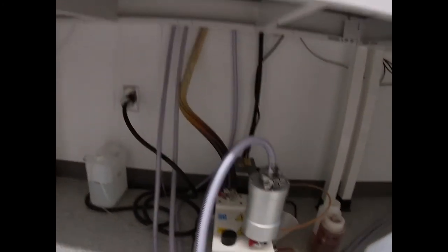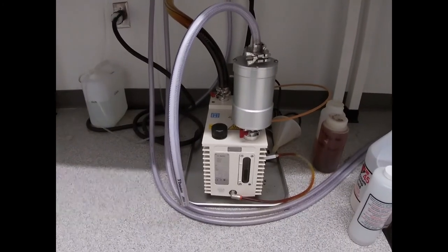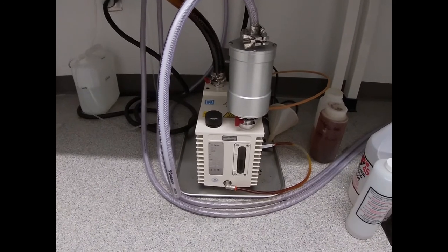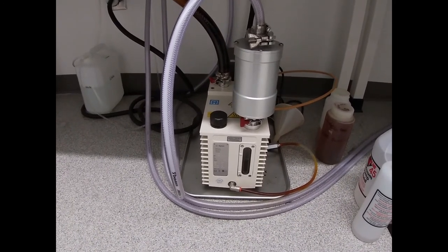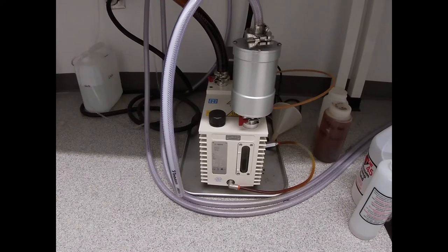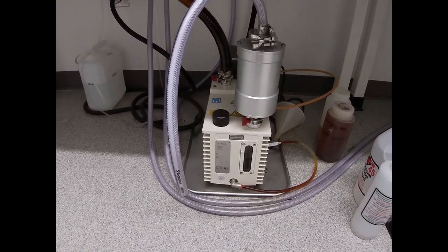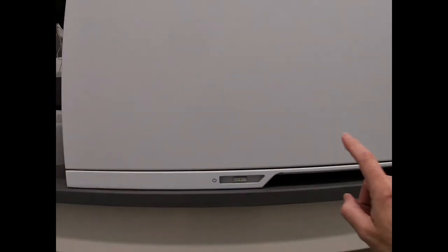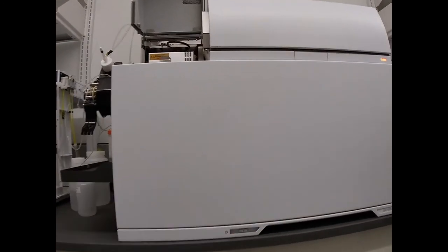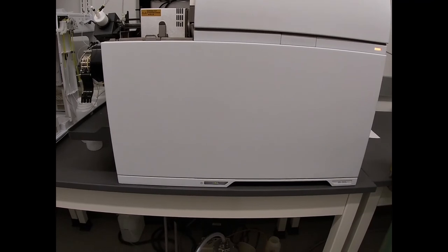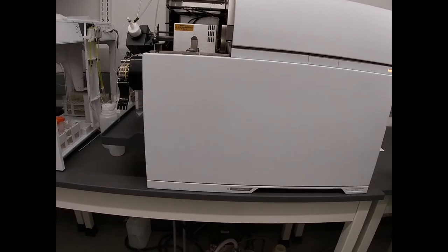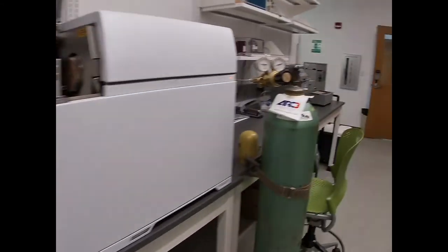So our vacuum system consists of a fore pump or a roughing pump. It is connected to the area actually between the sampler and the skimmer cone. So it pulls it down to a low vacuum around 10 to the minus three. And then of course we have a turbo molecular pump that's housed inside here. It pulls the mass spec chamber down to a high vacuum, 10 to the minus six Pascal.